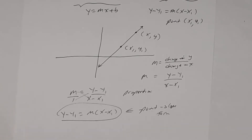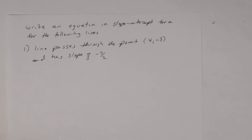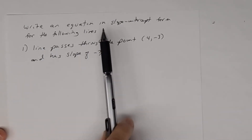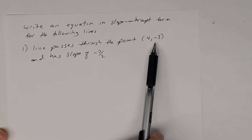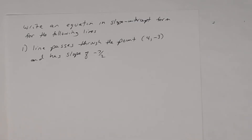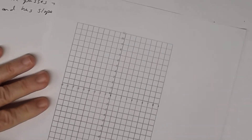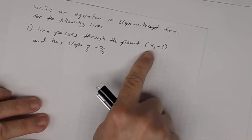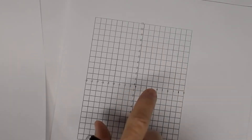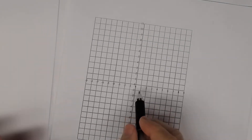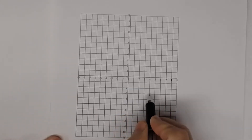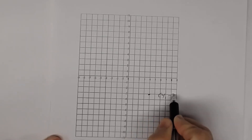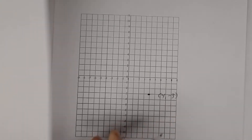Let's look at number one. The directions say to write an equation in slope-intercept form. This line contains the point 4, negative 3 and has slope negative 7 halves. If you were to graph it, you'd plot 4, negative 3 by going right 4 and down 3 from the origin. Since the slope is negative, the line falls.